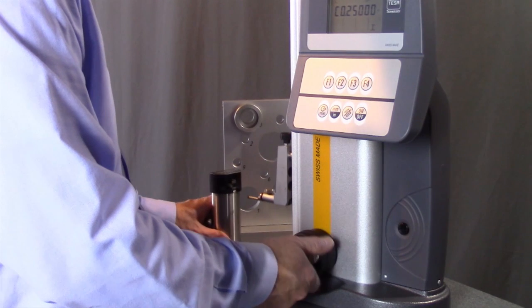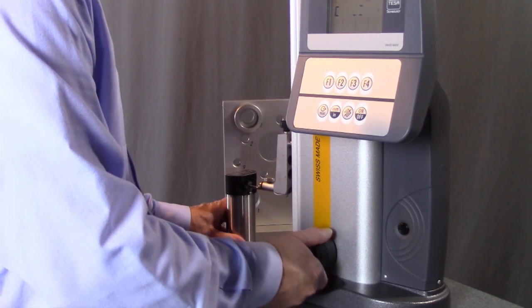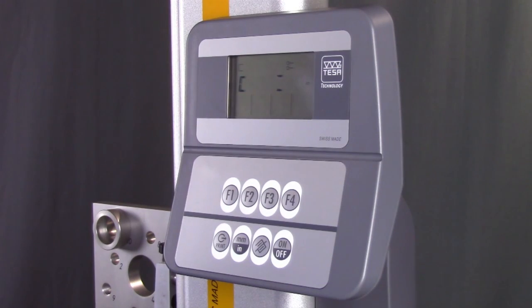It doesn't matter if you start by making contact on the top or the bottom, but you will take four hits with the probe on the setting master. When you're finished, the display reads start two and the gauge is ready to measure.